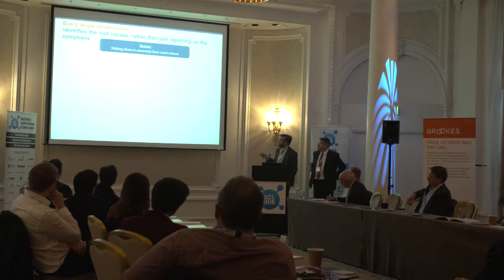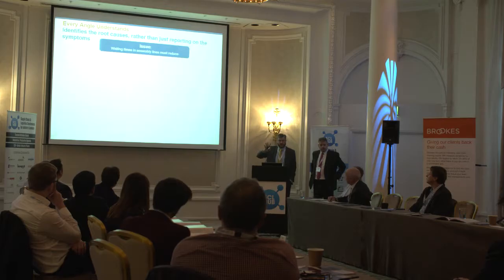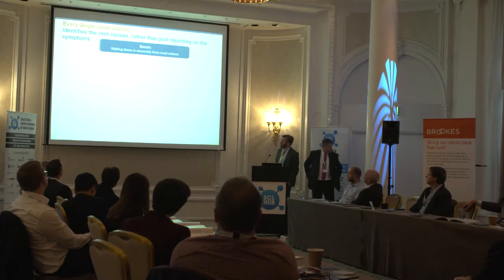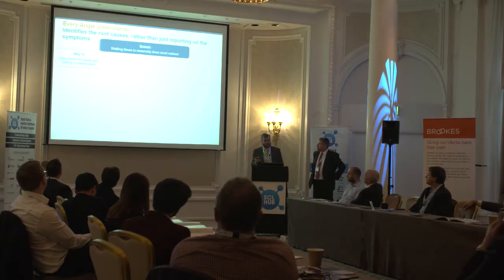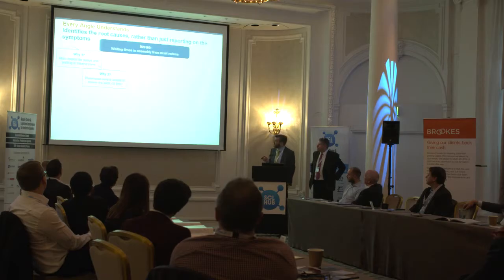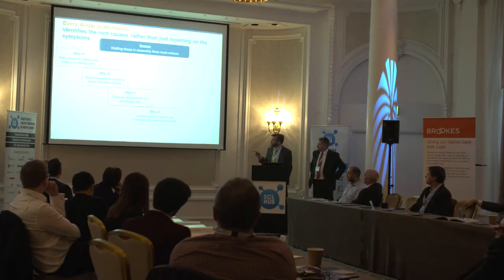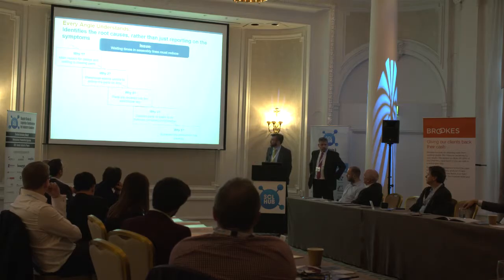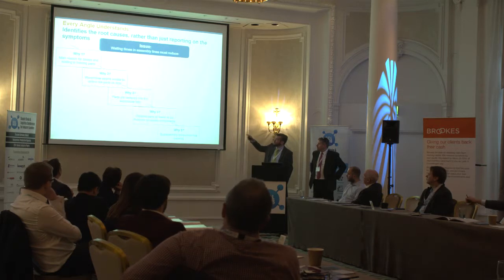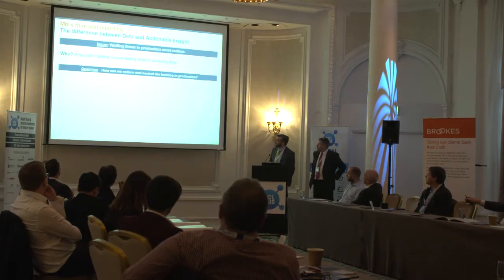Let's have a look at a typical symptom and root cause. We know that we have an issue — most companies won't say they're not sure what their problems are. This one is: waiting times in assembly lines must reduce. But the why is often the difficult part. We know we have to reduce them, but what's the reason that the waiting times are so long? Main reason for delays is missing parts. The warehouse can't deliver parts on time. Parts are received in the warehouse late. Delayed parts all seem to be in-house produced components, and sub-assembly production has a backlog.